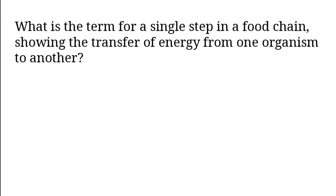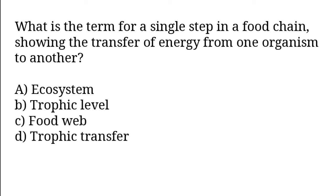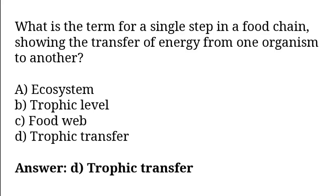What is the term for a single step in a food chain showing the transfer of energy from one organism to another? Options: Ecosystem, trophic level, food web, trophic transfer. So the correct answer is option D.